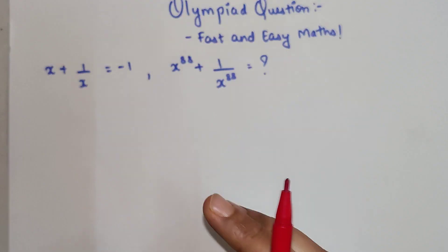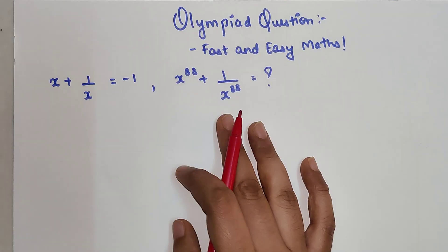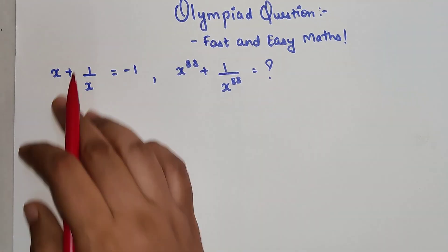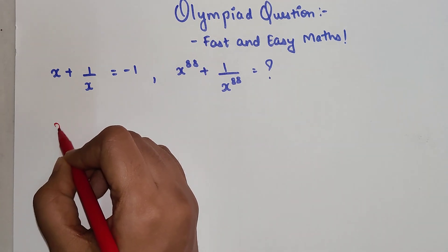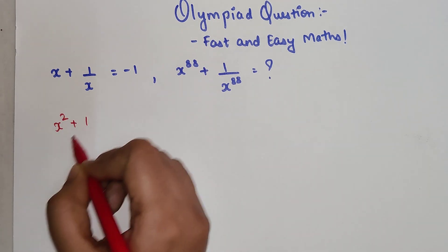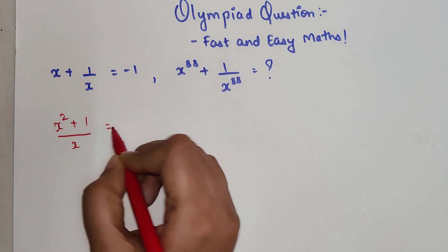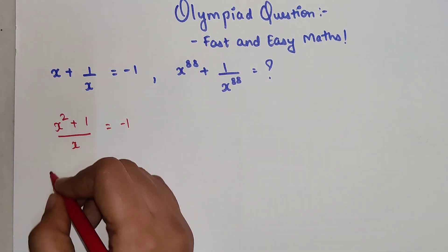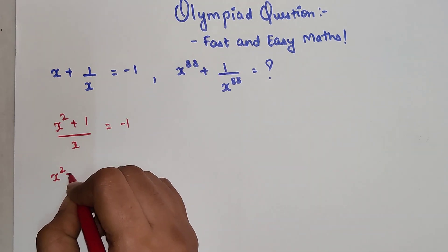We will start with whatever is given to us. Let's take an LCM here, so we will get x² + 1/x = -1. This can now be written as x² + 1 = -x.